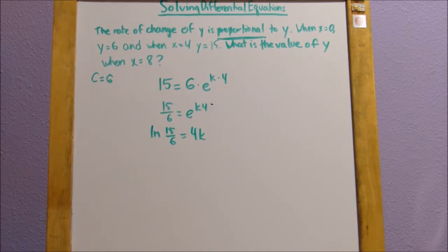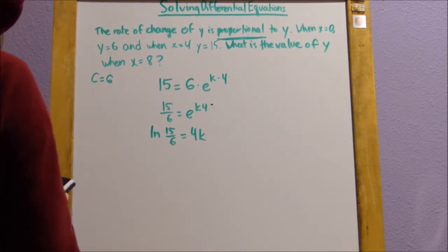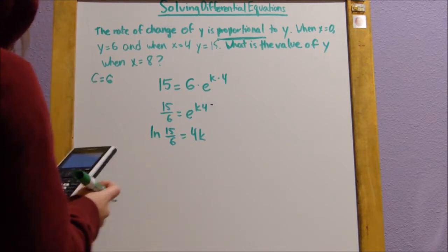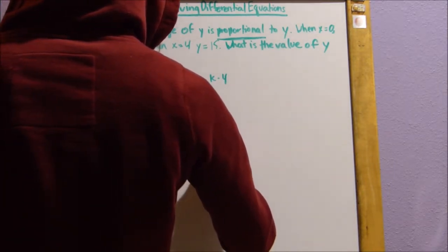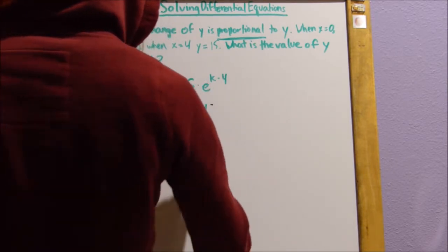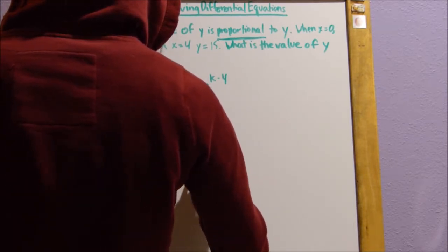So ln of 15 divided by 6, that's going to be 0.916291 equals 4k. Divide that by 4 to get k, so 0.229 equals k.